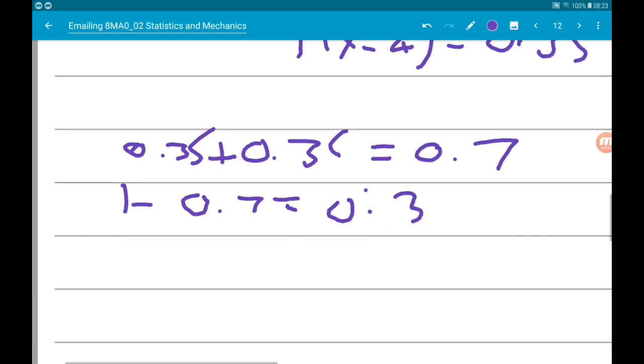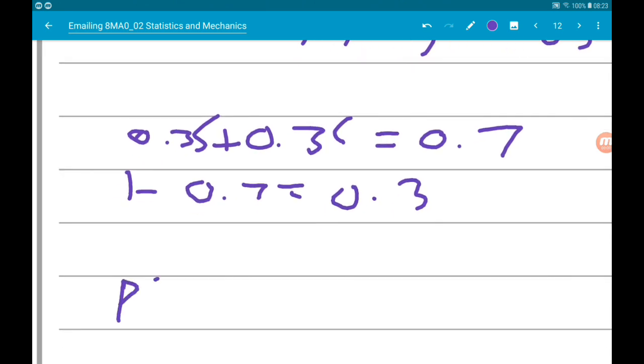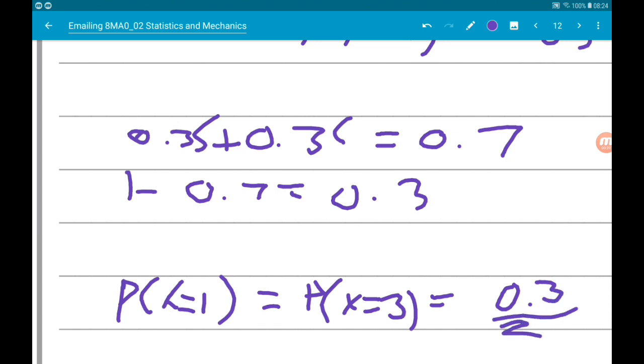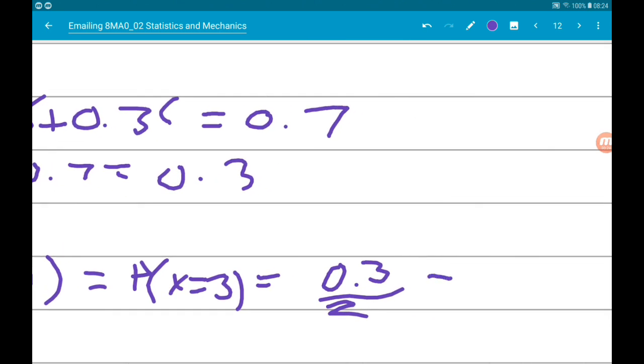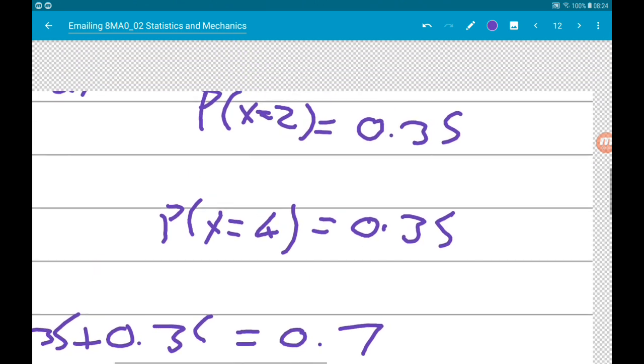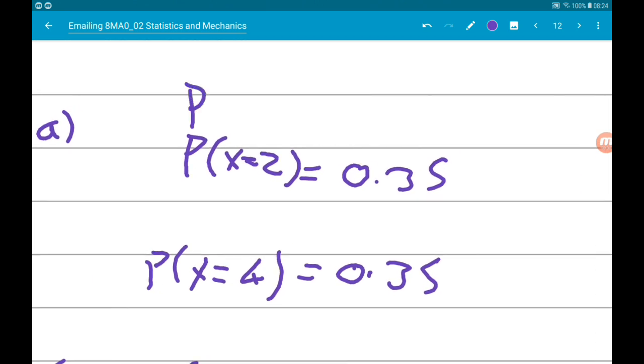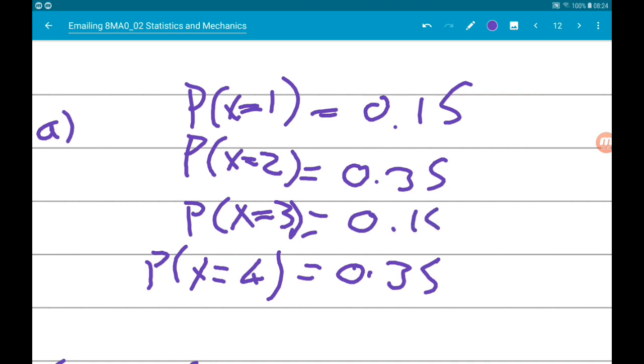Now we know that the probability of X equals 1 is 0.15, and the probability of X equals 3 is 0.15. So that is our complete probability distribution.